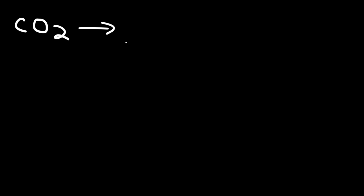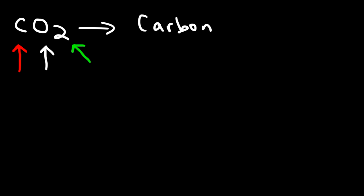Now let's shift to naming compounds, starting with molecular compounds since they're easier. Take CO₂ as an example. The first element is C for carbon, the second is O for oxygen — but the second element gets the suffix -ide, so oxygen becomes oxide. The subscript next to O is two; if you don't see a number, it's assumed to be one. You need to know these prefixes: mono = 1, di = 2, tri = 3, tetra = 4.